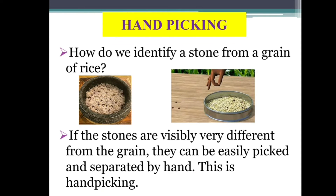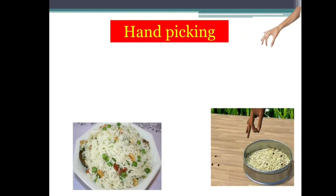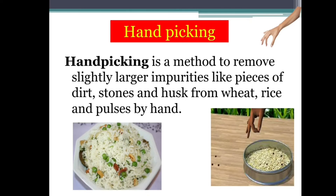Hand-picking — how do you identify a stone from a grain of rice? If the stones are visibly very different from the grain, they can be easily picked and separated by hand. This is called hand-picking. This method involves simply picking out the unwanted substances by hand and separating the useful ones. Hand-picking is used to remove slightly larger impurities like pieces of dirt, stones and husk from wheat, rice and pulses.